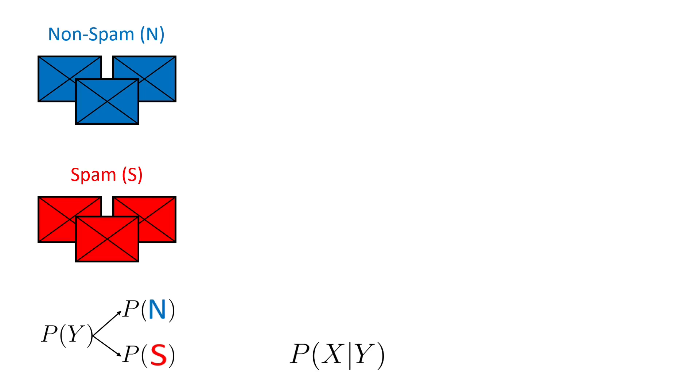To compute the probability of P of X given Y, we can use the naive assumption and say that all our words are independent of each other. And so we can compute the probability of each word in our corpus to appear in a spam or non-spam email by simply counting the frequencies.